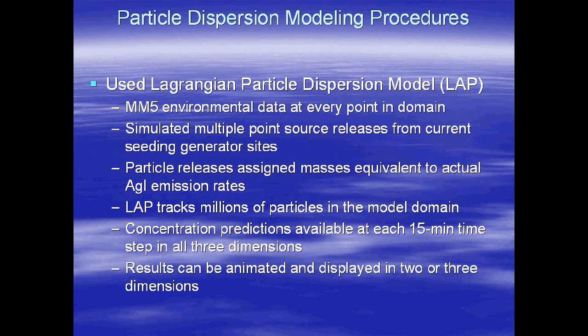This is our MM5 domain, with the inner domain focused on Tahoe. The region we actually modeled for this case study was a little bit to the southeast over the Walker and Carson River basin. This is the inner domain showing the topography. The main Sierra crest line is running along here, and this is the inner part of the Walker basin.